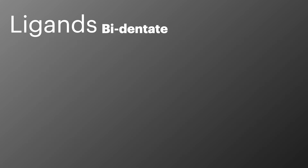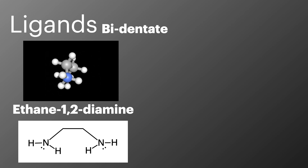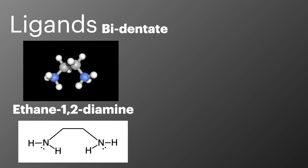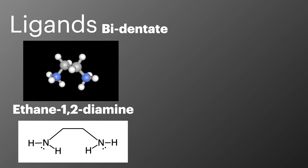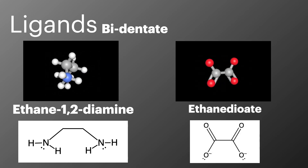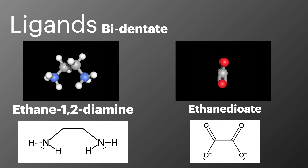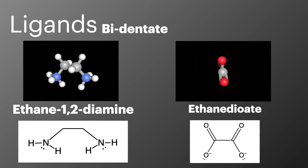The second category is bidentate ligands, which form two coordinate bonds with the central metal ion. The first example is ethane-1,2-diamine, which uses the amine groups at each end — the lone pairs on the nitrogens form the coordinate bonds to the central metal ion. The second example is ethanedioate, where the lone pairs on the oxygens form the coordinate bonds to the metal ion. We'll look at these in action in a later episode.